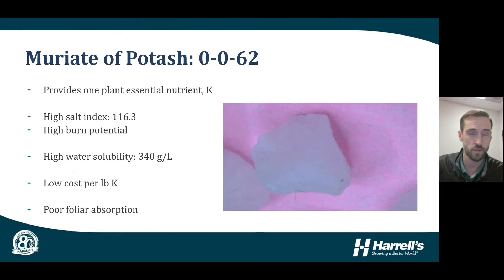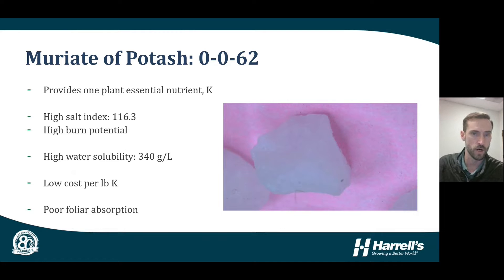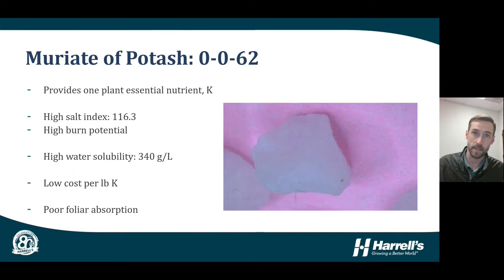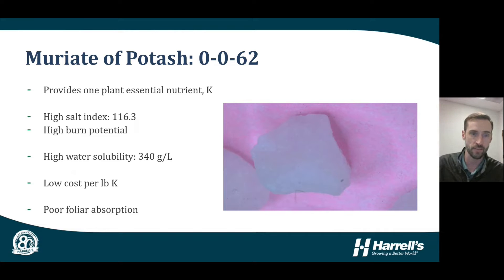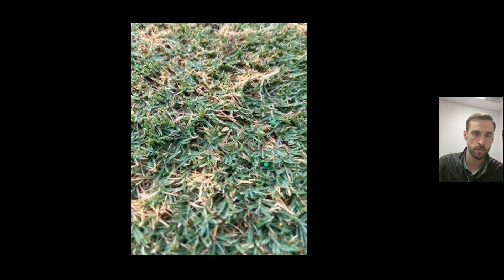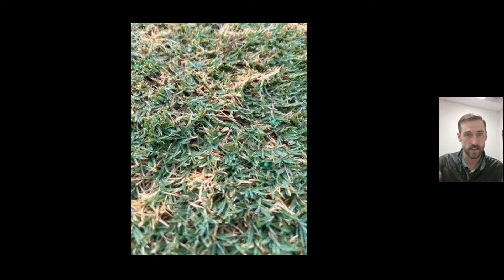Muriate of Potash has high water solubility at 340 grams per liter, making it an attractive option for meltdown foliar applications — however, high solubility does not mean it is readily taken up into the plant as a foliar application. MOP is attractive for granular applications or blending due to its relatively affordable cost per pound of potassium, but it has poor foliar absorption characteristics. Shown here is an example of turf burn on bermuda grass caused by a MOP application made on a hot, dry day without irrigation, where the salt extruded water from the turf causing these burn characteristics.